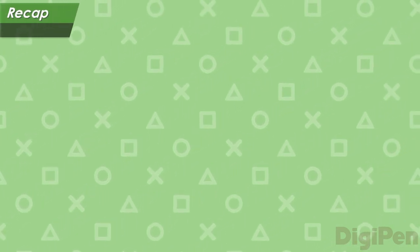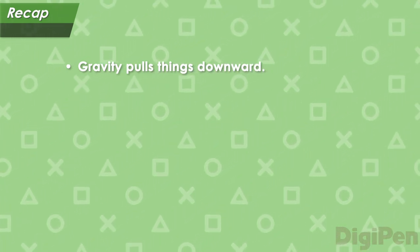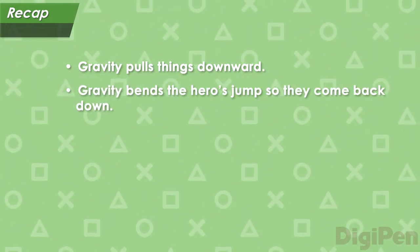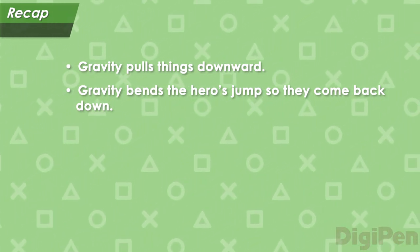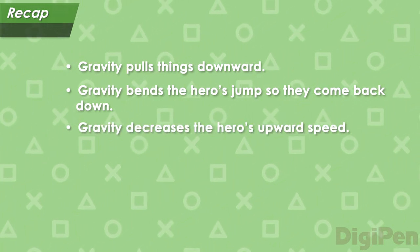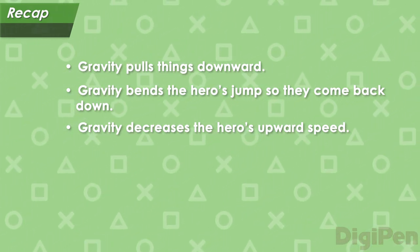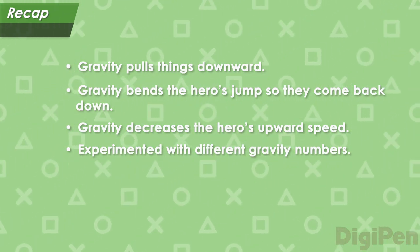Let's recap what we've learned in this video. First, we discussed the concept of gravity in real life — it's a phenomenon that pulls things downward. We learned that gravity in CrystalCat bends the hero's jump into a parabola so that they come back down to the ground. Next, we learned that gravity decreases the hero's upward speed as long as they are in the air. Finally, we used another modified version of CrystalCat to experiment with different numbers for the strength of gravity. In the next video, we'll put together all three of the numbers we've used so far. I'll see you then.